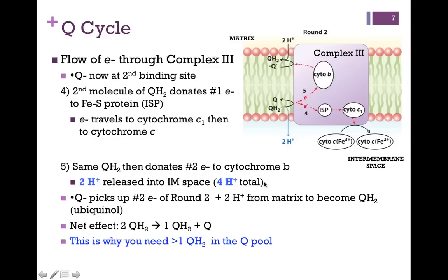One electron is passed to the iron sulfur protein, next to cytochrome C1, still a part of Complex III, and then finally from there to our soluble component, cytochrome C protein. So at this point, we've passed two electrons, one each to two carriers of cytochrome C.